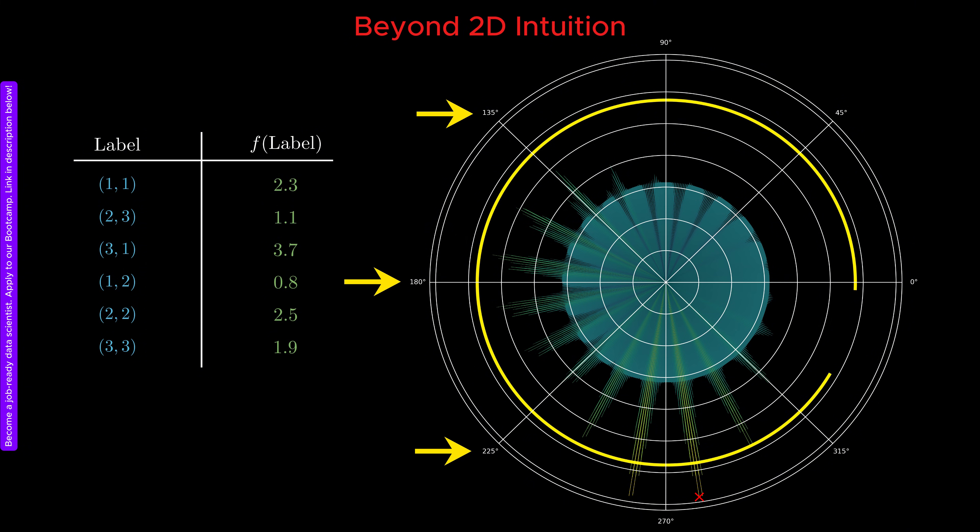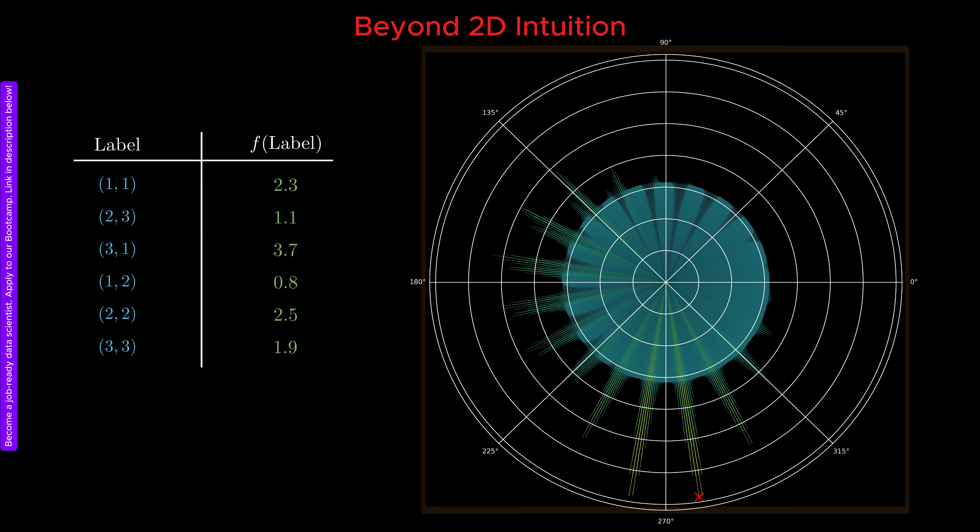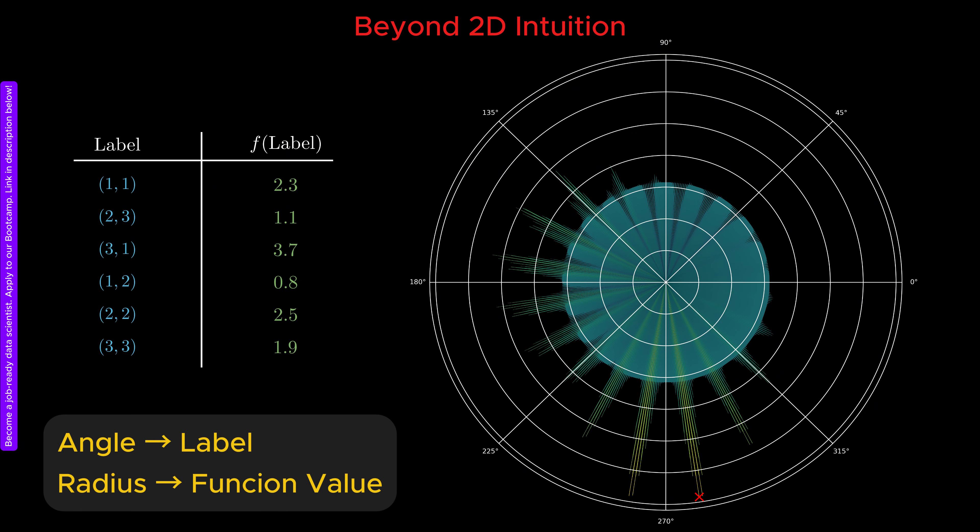The range from 0 to 360 degrees contains infinitely many real numbers, which means we can accommodate an arbitrarily large number of labels. We can assign each label a unique angle. Then we use a circular coordinate system where the angle represents the label and the radius represents the value of the function. Each data point becomes a marker placed at the appropriate angle and radius.